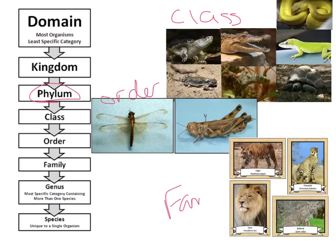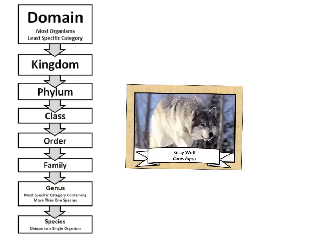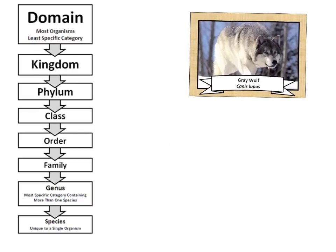Down here we've separated organisms into family — basically the feline family. At this point the organisms have more similarities than they have differences. By the time we narrow it down to genus and species, these organisms are very, very closely related. Within the genus there are very few species and very few differences, and the species is specific to one particular organism.